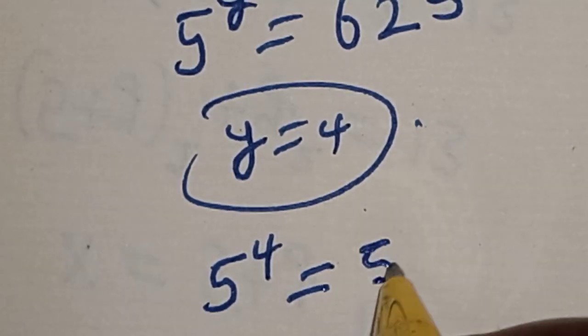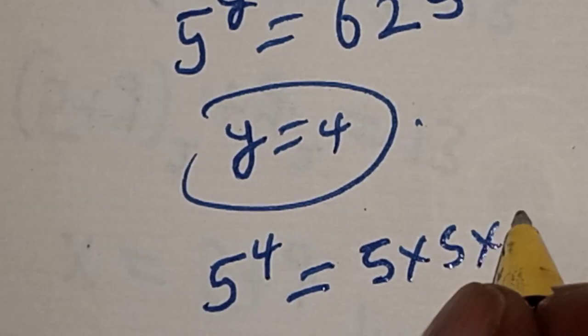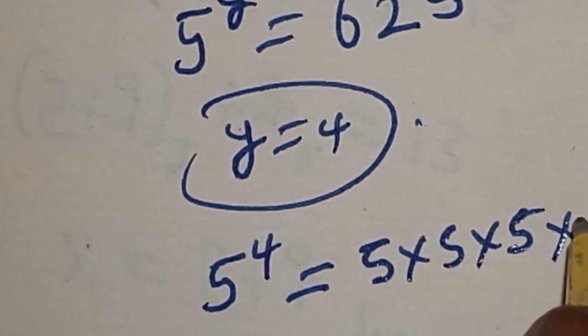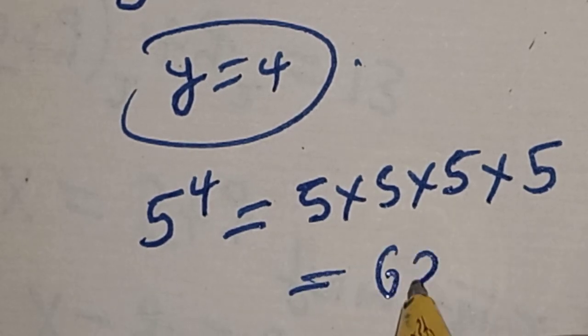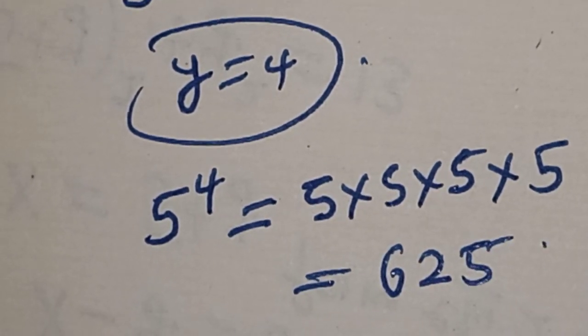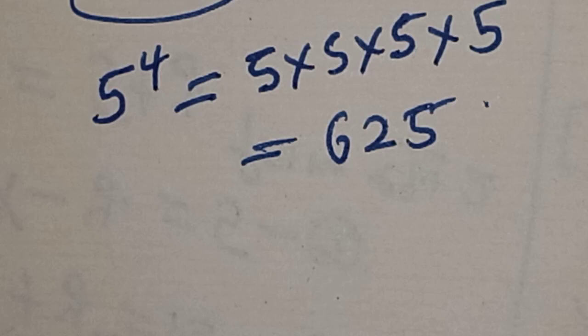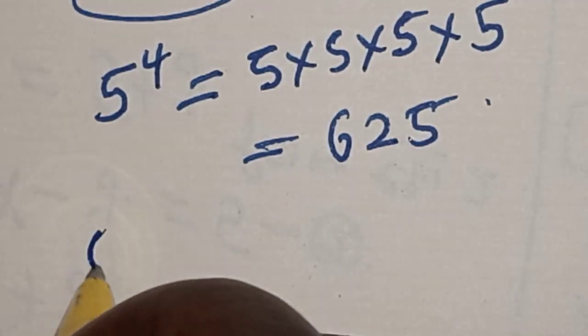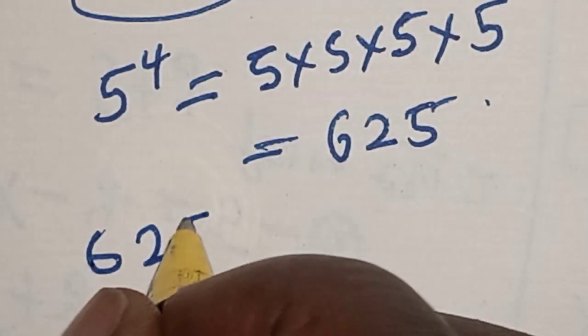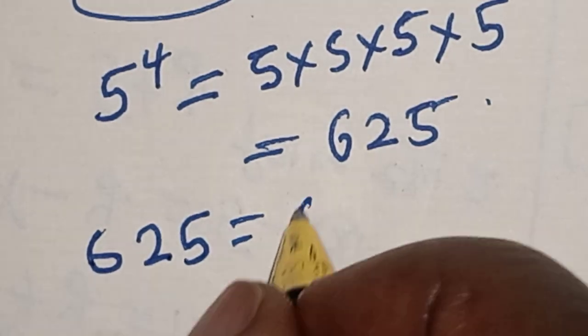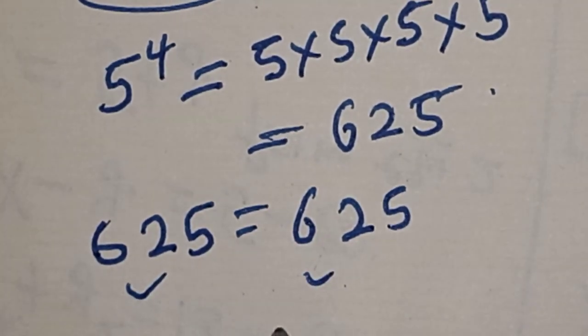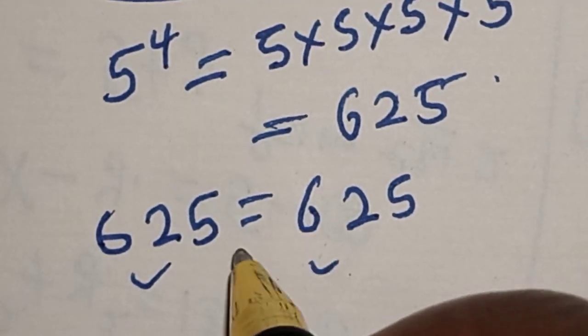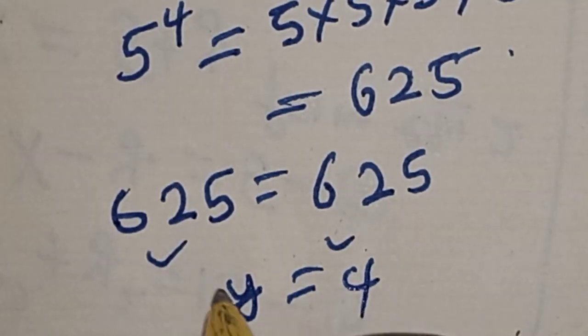5 times 5 times 5 times 5, this is equal to 625. So therefore, the left hand side 625 is equal to the right hand side 625, which satisfies the given equation at y is equal to 4.